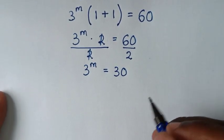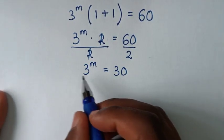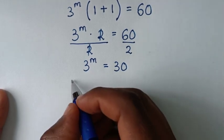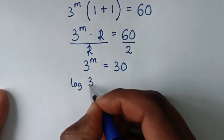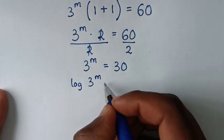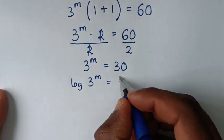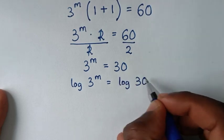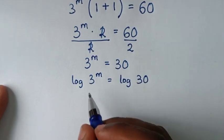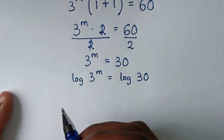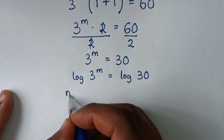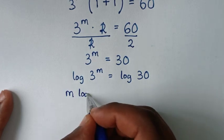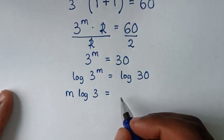To get m, we will apply log to both sides. So it will be log of 3 power m is equal to log of 30. Then the power m moves down, so it becomes m times log of 3 is equal to log of 30.